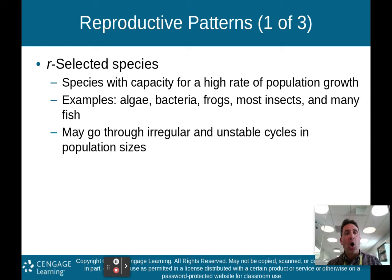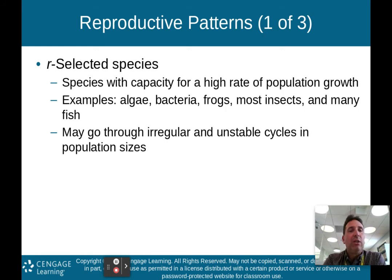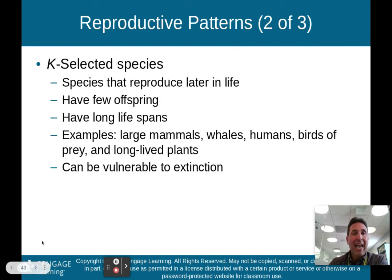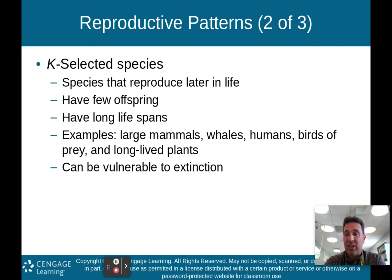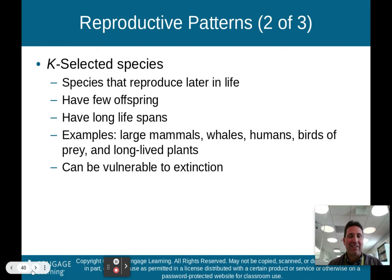Moving on to reproductive patterns: R-selected and K-selected species. R-selected species have a high capacity for population growth — algae, bacteria, frogs, insects, and many fish. They may go through irregular and unstable cycles in population sizes but can have a very high rate of population growth. K-selected species are us — they reproduce later in life, have few offspring, and have long lifespans. Large mammals like humans, whales, birds of prey, and long-lived plants are K-selected species. However, K-selected species can be vulnerable to extinction, like the panda, because they don't produce many offspring and they reproduce later in life.